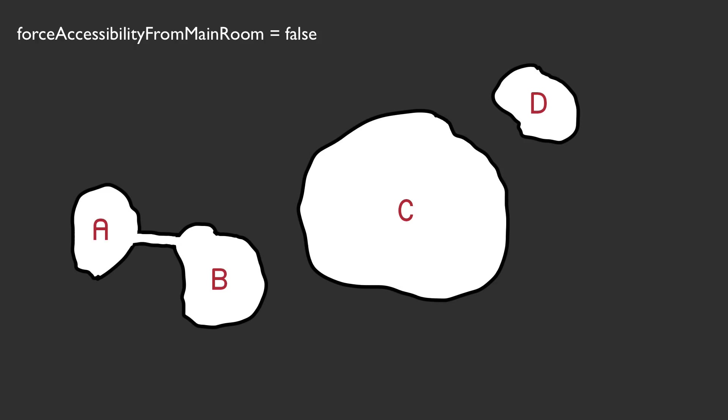We move on to room B, see it's already connected to room A, so we go to room C. We compare the distance to room A, room B, and room D and find its closest connection is to room D, so we make that connection. Finally we go to room D and see it's already got a connection — and here we can see the problem: not all the rooms are connected.